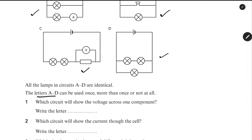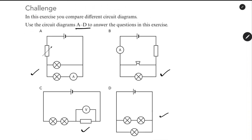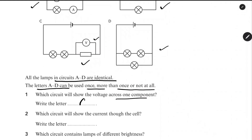The letters A to D can be used once, more than once, or not at all. All the lamps in the circuits are identical. First question: which circuit will show the voltage across one component? Looking at the 4 circuits, the circuit that measures voltage across one component with a voltmeter is circuit C.